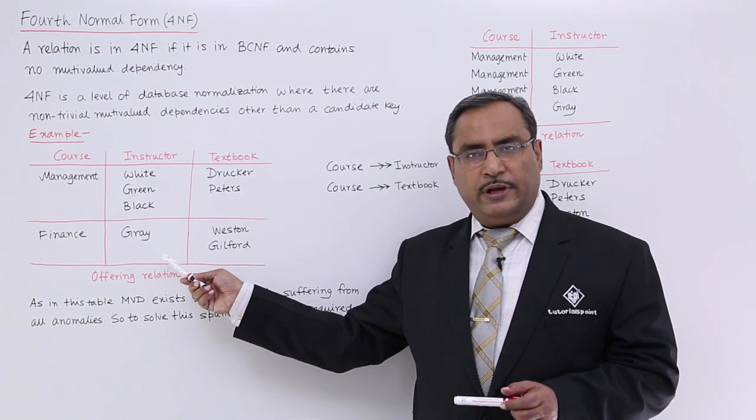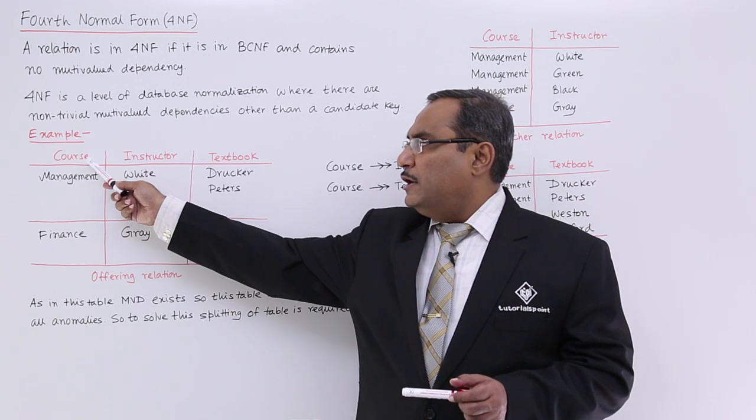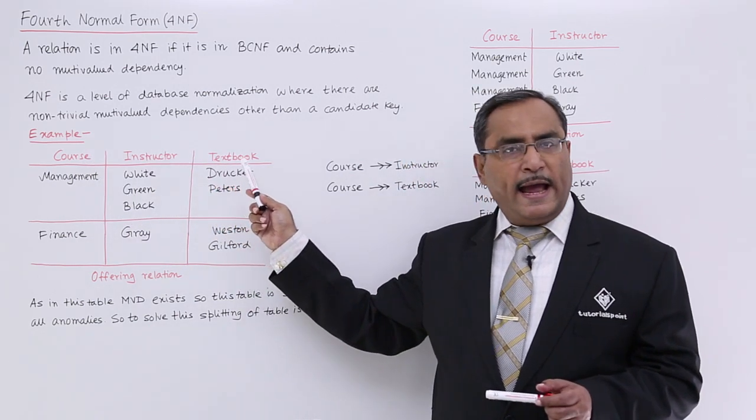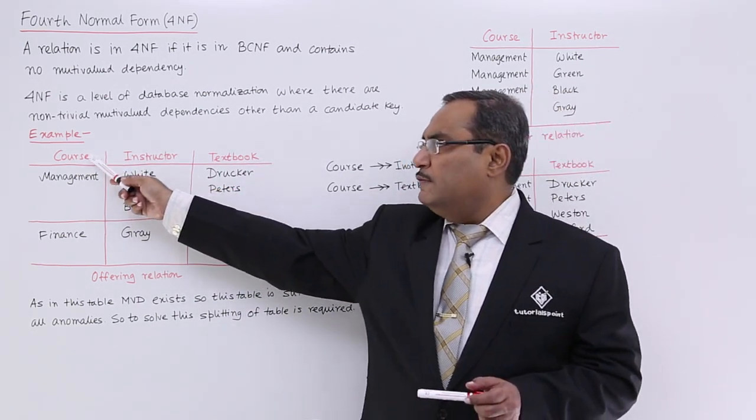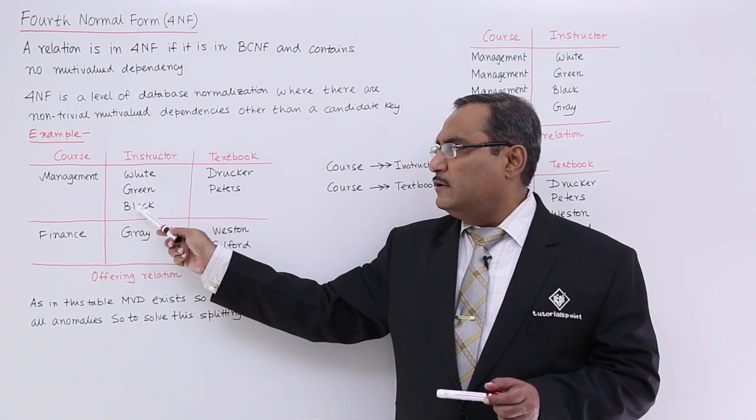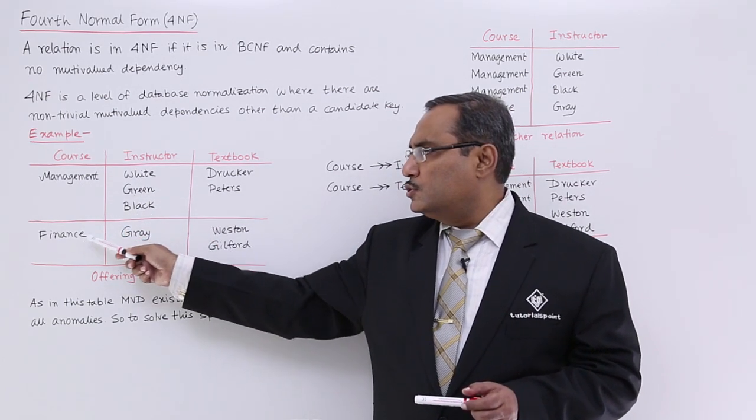You can consider this relation. We are having three attributes: course, instructor and textbook. For a certain value for course, we are having set of values for instructor.